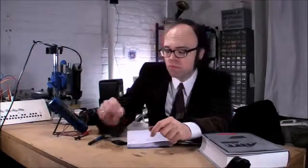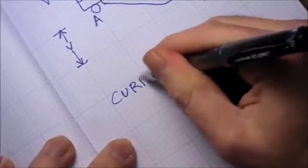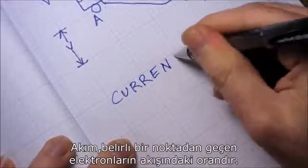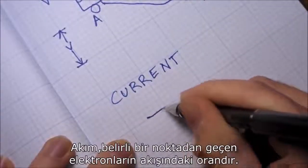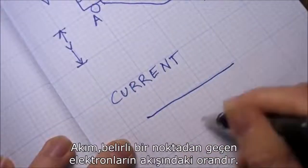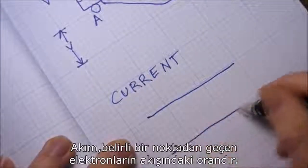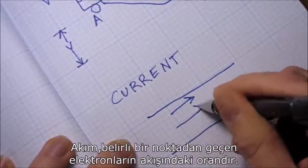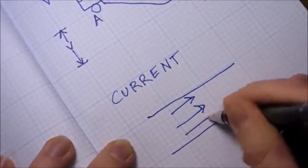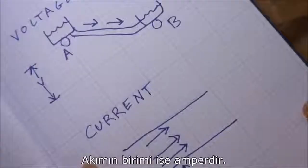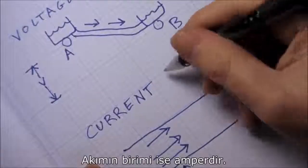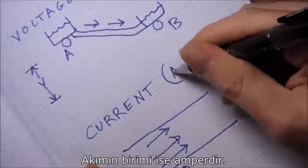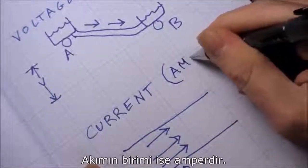Current refers to the rate at which electrons flow through a given point. Current is measured in amperes.